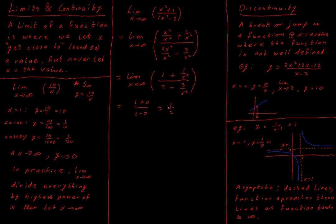What does that mean in practice? It means that as x tends towards positive infinity, the y output from our function approaches one half. It never technically equals one half until x reaches infinity, but as you substitute in very large values of x into this function, you will get values for y that are very, very close to one half. That is the meaning of taking our limit as x tends to infinity.